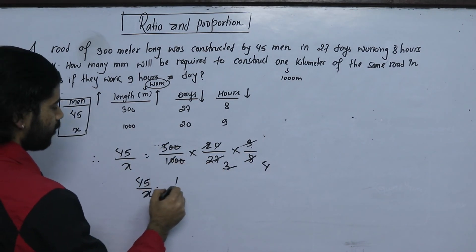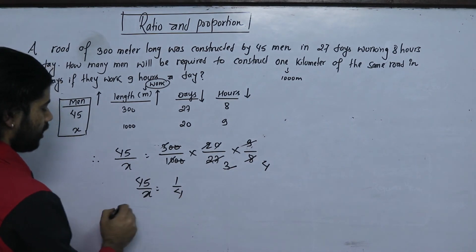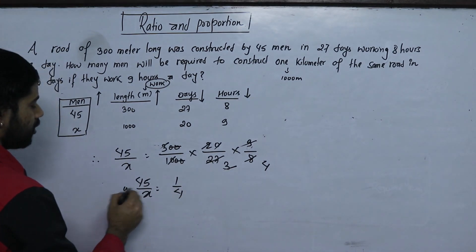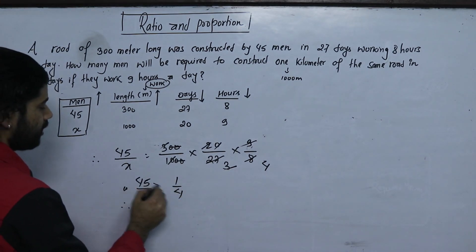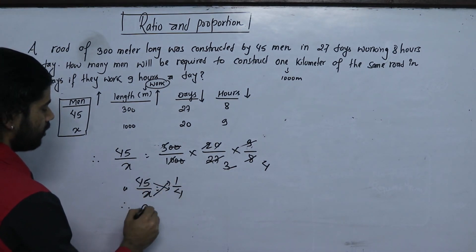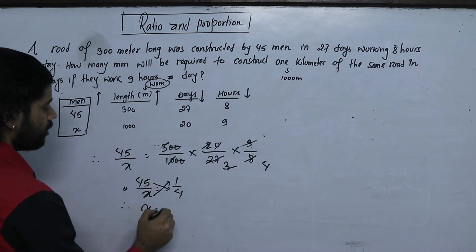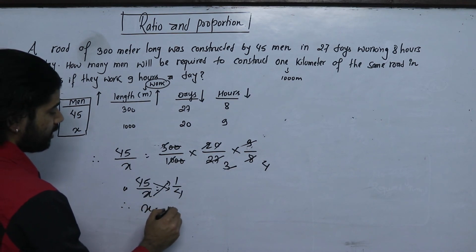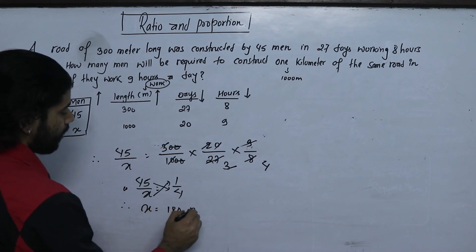We can cross-multiply. The original answer comes out to be 84 men.